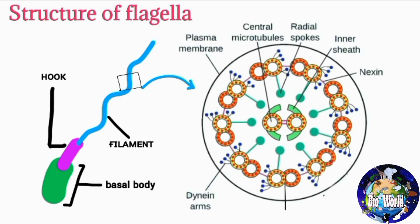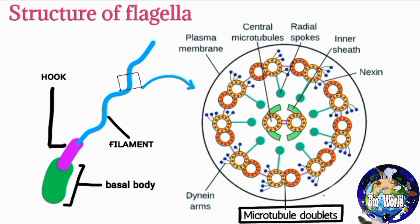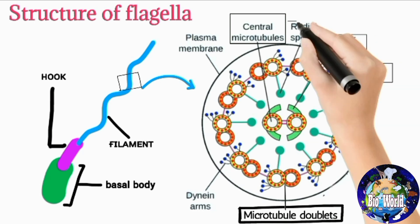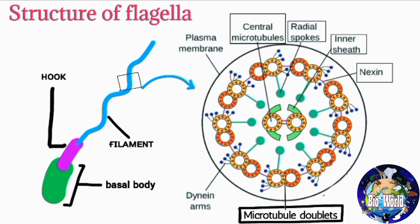If we cut the flagellum and take a transverse view to see its internal structure, we find that a flagellum is composed of nine peripheral pairs of microtubules, called microtubule doublets. These doublets are interconnected by nexin linkers. There is also a pair of centrally located microtubules, enclosed by a central inner sheath connected to one tubule of each peripheral doublet by radial spokes. This arrangement is referred to as the nine-plus-two arrangement.